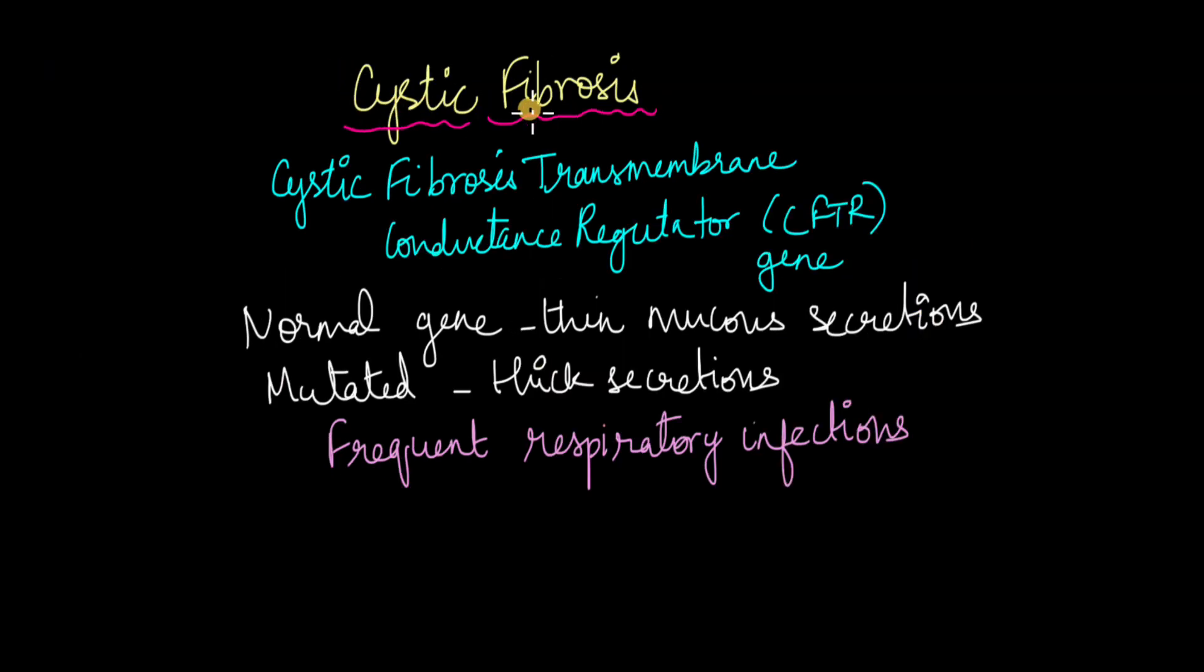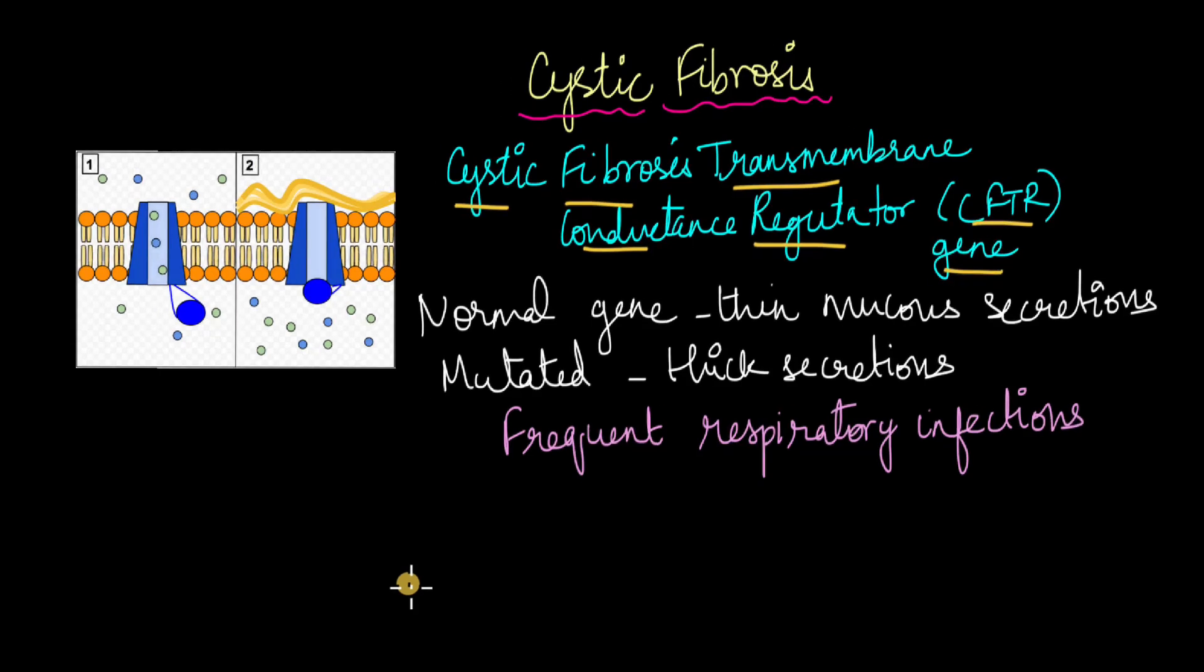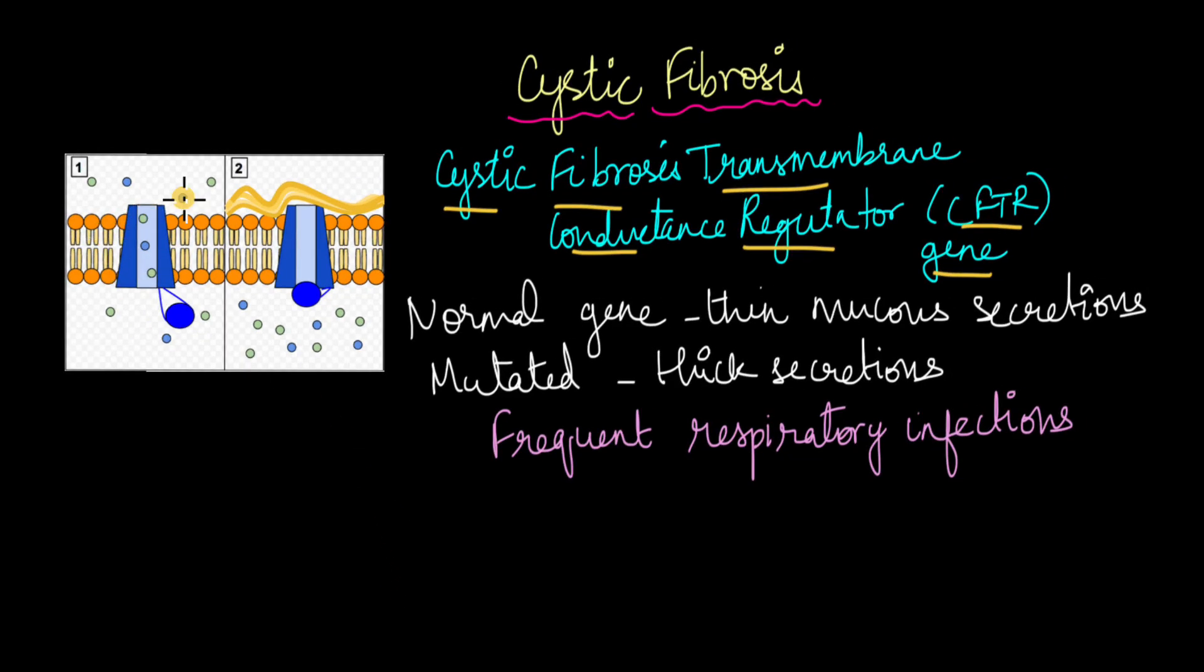Another autosomal recessive disorder is cystic fibrosis. This is due to a mutation in this gene that is known as cystic fibrosis transmembrane conductance regulator, CFTR gene. I know it is quite a mouthful, but what the CFTR does is that it is a transmembrane protein.